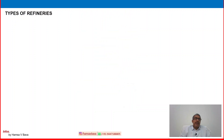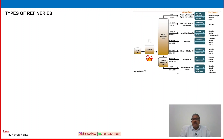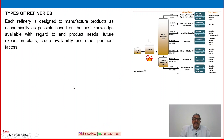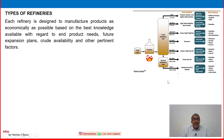Type of refineries — let us start and look at the picture here. This is a crude oil distillation unit. Each refinery is designed to manufacture products as economically as possible based on the best knowledge available with regard to end product needs, future expansion plans, crude availability, and other pertinent factors. Each refinery in different countries is based on the crude availability, crude property, and market demand — they will decide what products they have to make.